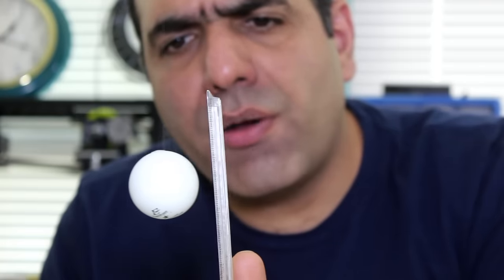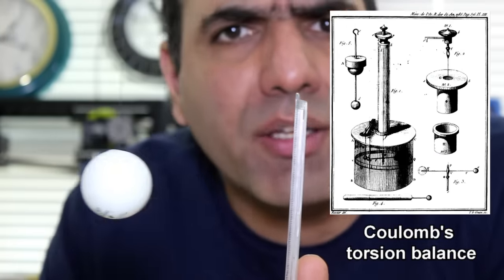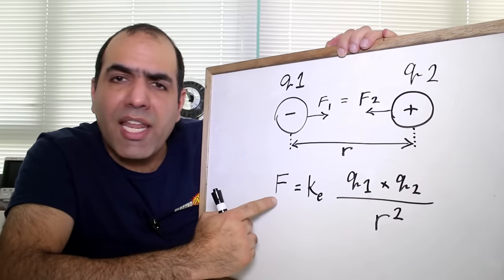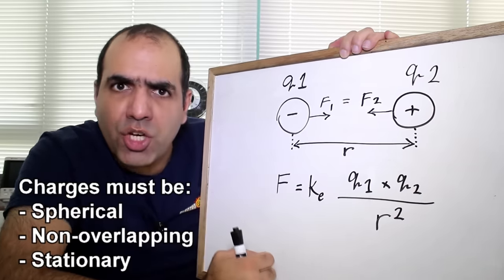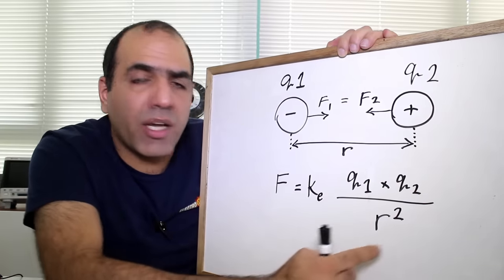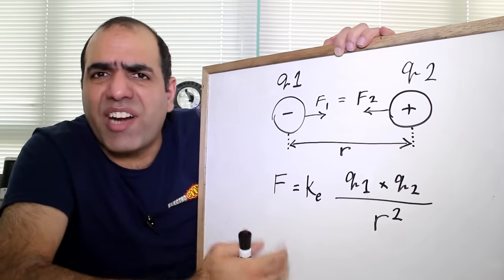Coulomb did a similar thing with two charged balls, one of which was twisting a spring-like string. From that experiment, he inferred Coulomb's law, which states that the electric force between two static charges is proportional to the product of their charges divided by the square of their distance, which is very similar to Newton's law of gravity.